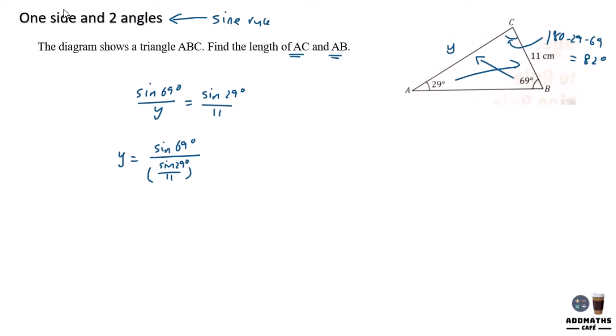The answer will be 21.18 cm. So this is your AC. Now you are required to find AB using the same method.